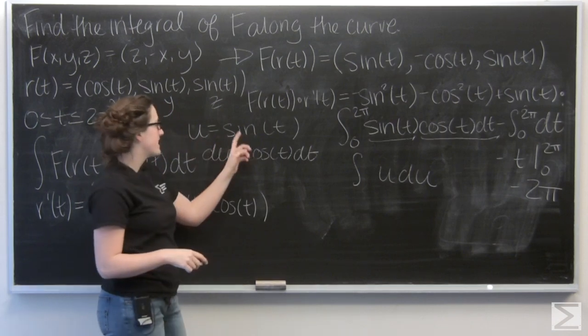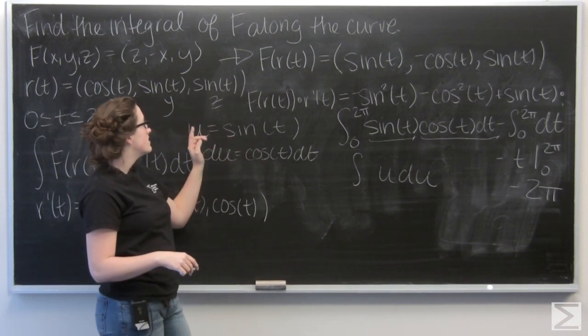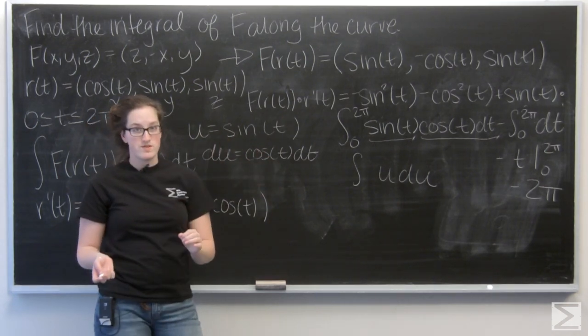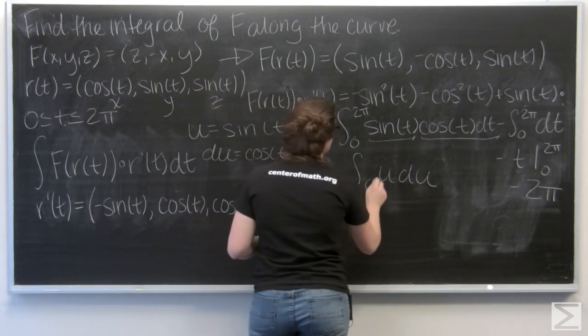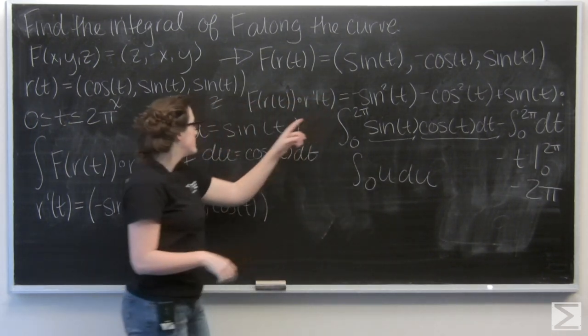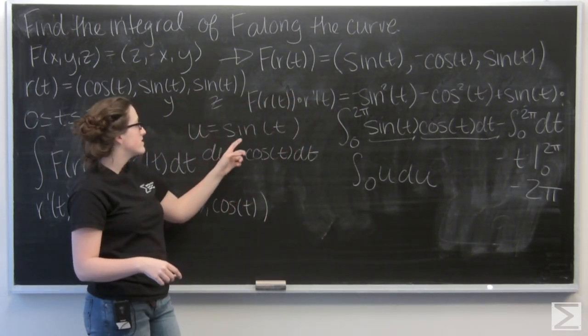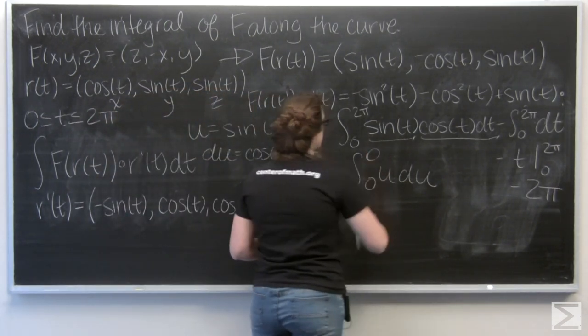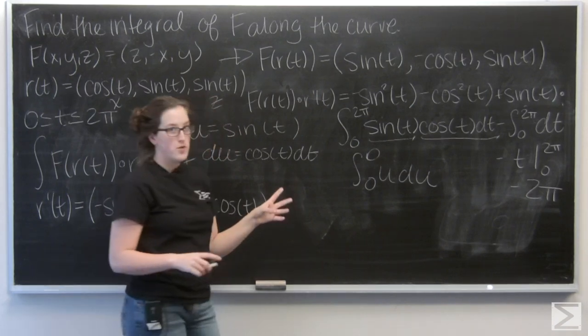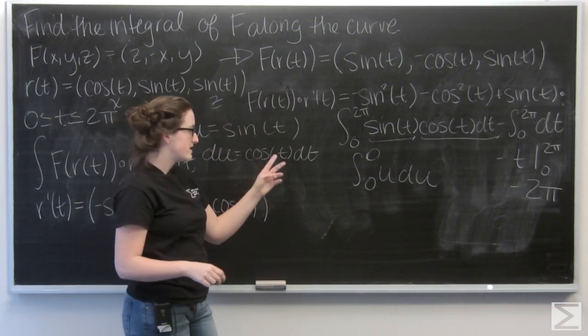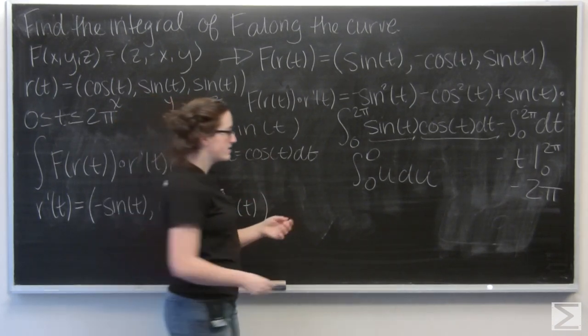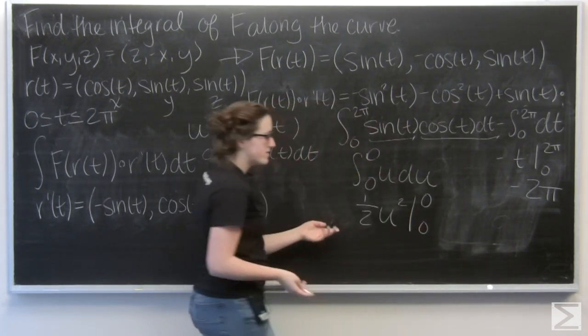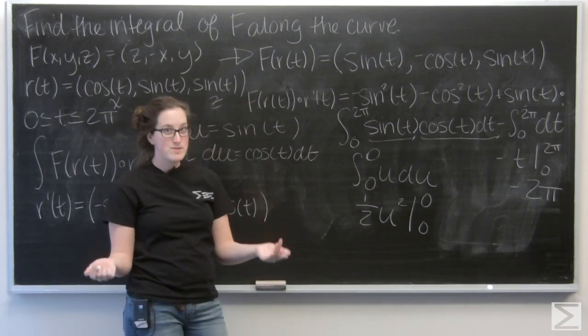So we know u equals sine of t. So for the lower bound, let's plug in 0. u equals the sine of 0, which is just going to be 0. And then let's plug in 2 pi. u equals the sine of 2 pi, which is also 0. So both of my bounds are the same. If I integrate this, I'm going to get 1 half u squared, evaluated from 0 to 0. And I'm just going to get 0.